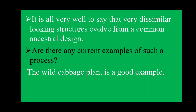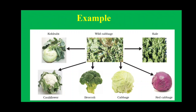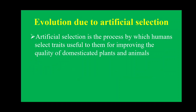Very dissimilar looking structures can evolve from a common ancestor design. A good example to understand evolution due to artificial selection is the wild cabbage plant. Initially, there was only one variety — wild cabbage. Right now you can see varieties such as kohlrabi, kale, red cabbage, cabbage, and broccoli. All these varieties evolved from the wild cabbage through artificial selection and human effort.